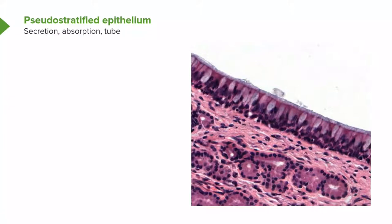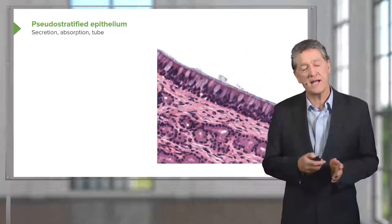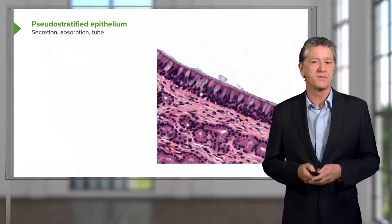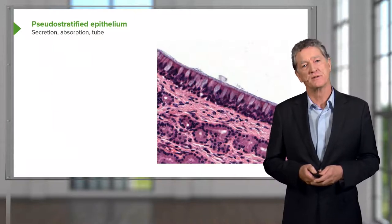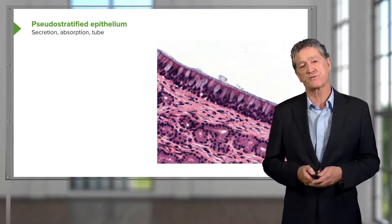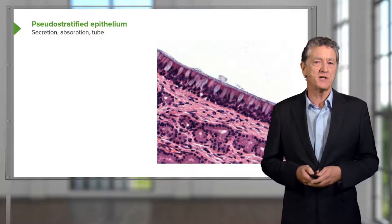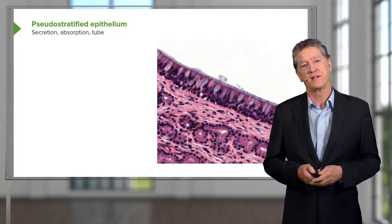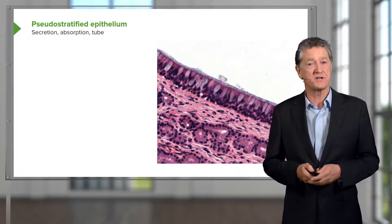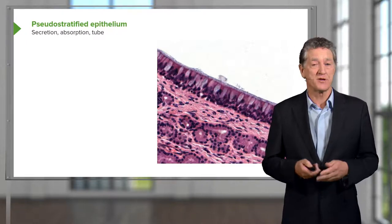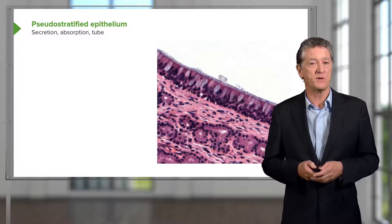Sometimes an epithelial surface such as pseudo-stratified epithelium has surface specialisations. Although the nuclei appear at different heights, all cells sit on the basement membrane. The surface specialisations here are cilia, which transport secretions, foreign bodies and cells along the surface. Pale secreting cells secrete material onto the surface, while darker stained cells are absorbing. So in one epithelium you can have multiple cells performing different functions.